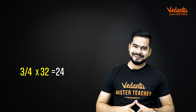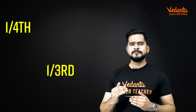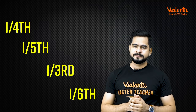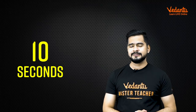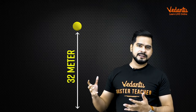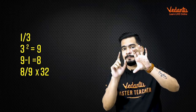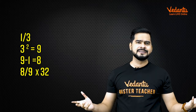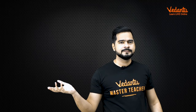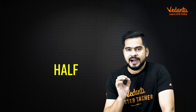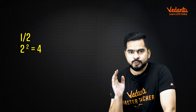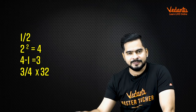This is a super amazing trick, baccha party! For this type of kinematics question, whenever they ask one third, one fourth, one fifth, one sixth — use this same trick and you can answer in just 10 seconds. Suppose in the same question the maximum height is 32 meters and you have to find the height when velocity becomes one third. Take three squared, that is nine, minus one gives eight. So it is eight by nine into maximum height, which is eight by nine into 32. Done! Whatever fraction is given — half, one third, one fourth, one fifth — square the denominator, subtract one for the numerator, multiply by maximum height. That's it, baccha party.